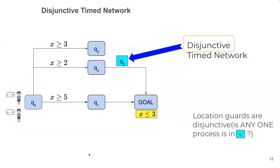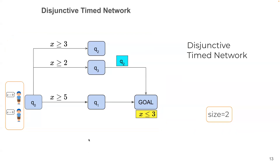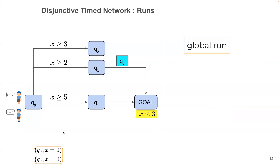The word 'disjunctive' comes from the fact that location guards are disjunctive in nature — they check if there is any one process in a location, though there could be more than one. The size of a network is the number of processes in it; in this case it is two.